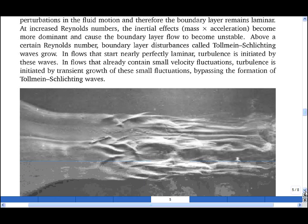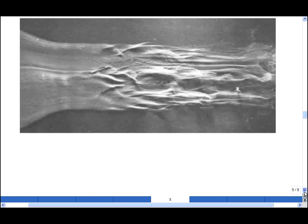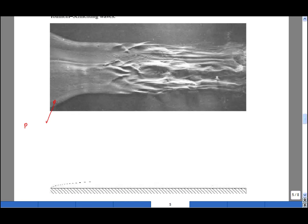The image shown here is a view of streaks in a boundary layer taken from above. At the leading edge, the Reynolds number is low. This means that viscous forces are strong, small perturbations tend to be damped, and therefore the boundary layer is laminar.